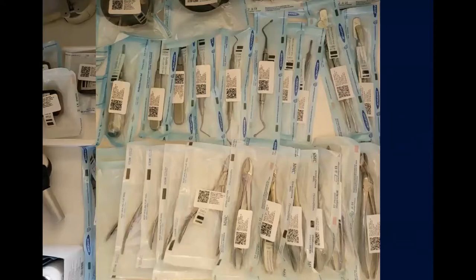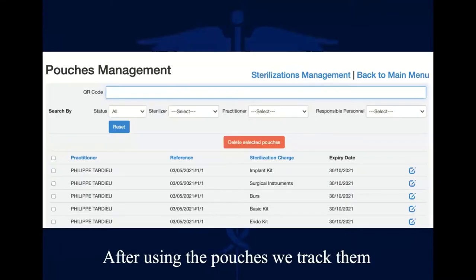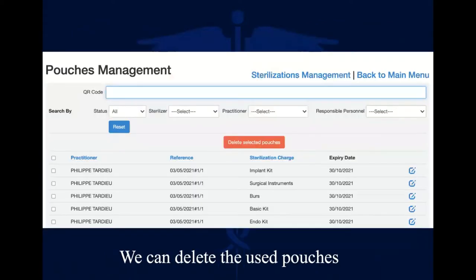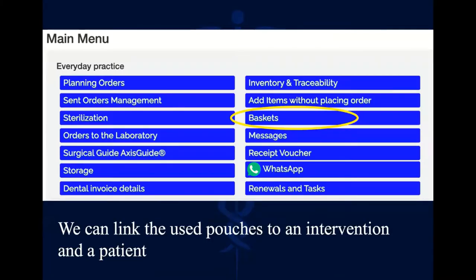This is stored — these are my drawers. All my instruments are stored and I can find them very easily. When I use these stored instruments, I can find them very easily in the pouch management section. In pouch management — not sterilization management — under QR code, all the pouches that have been used: you scan them, scan the QR code, and they get ticked in the checkbox. Then you can delete the used pouches, or you can do something else — scan them and find them, then either delete them or link them to a patient.